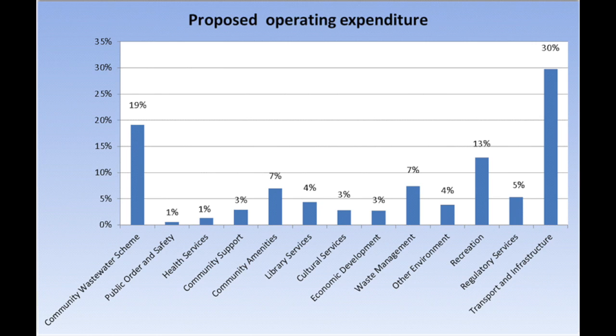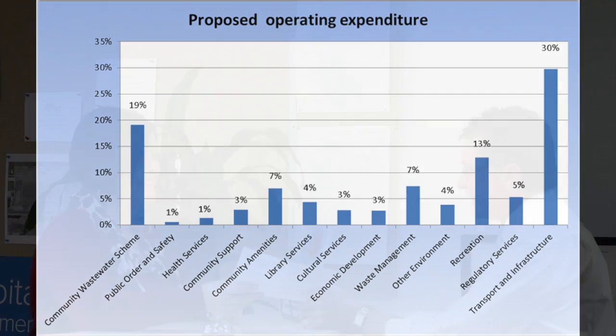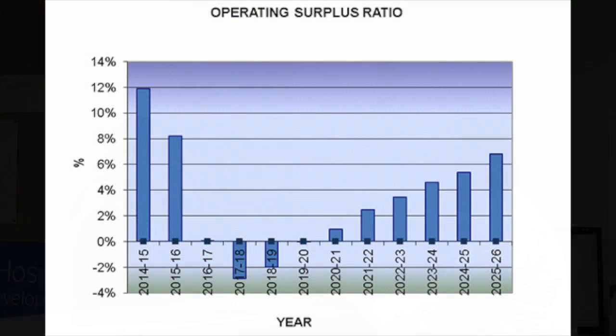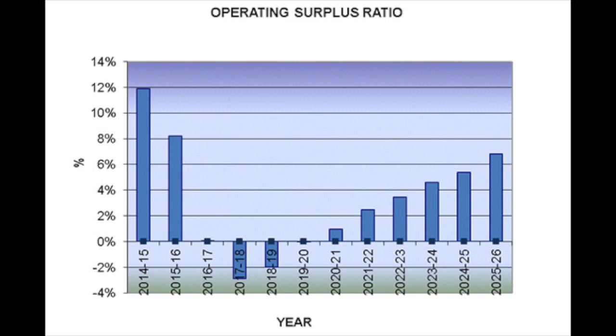The operating result is one of the main indicators Council focuses on when building its budget. Council is not about making profits but it does need to make sure that what it raises in Council rates and receives from grants will pay for all the services the community needs. The operating surplus ratio chart shows that in 2016-17 we forecast a small surplus, with further surpluses being achieved over the term of the plan.